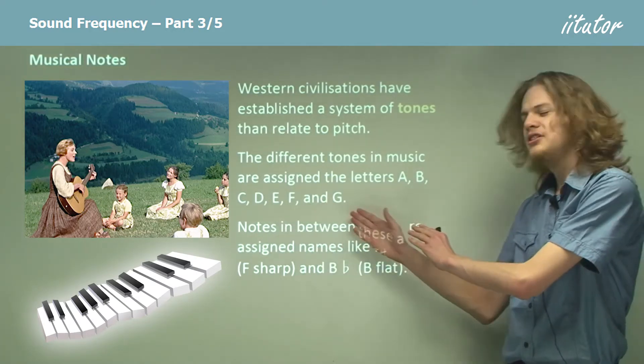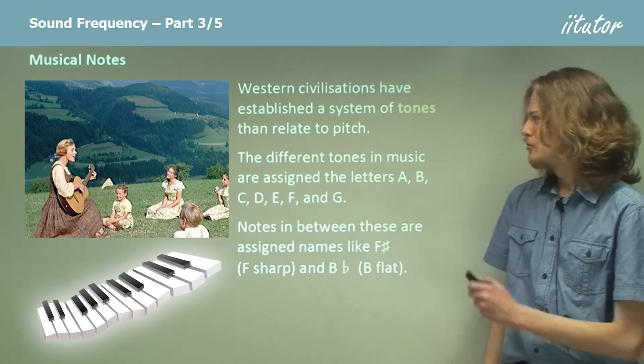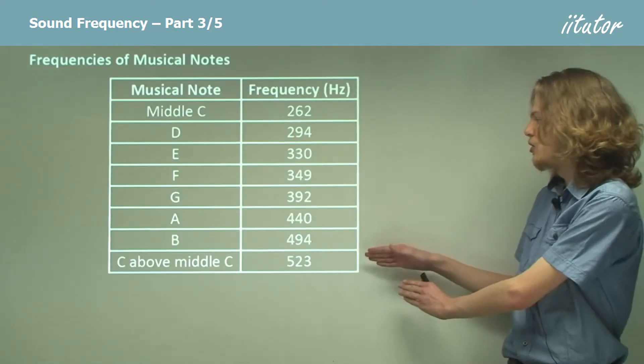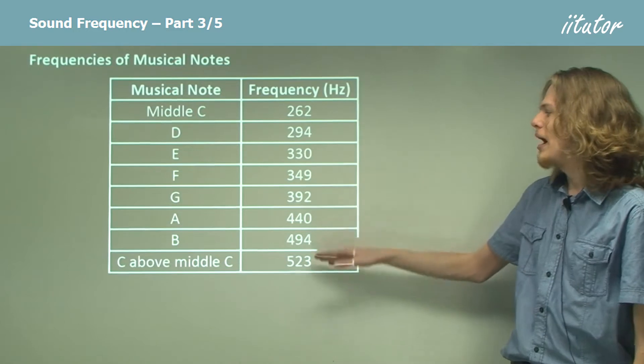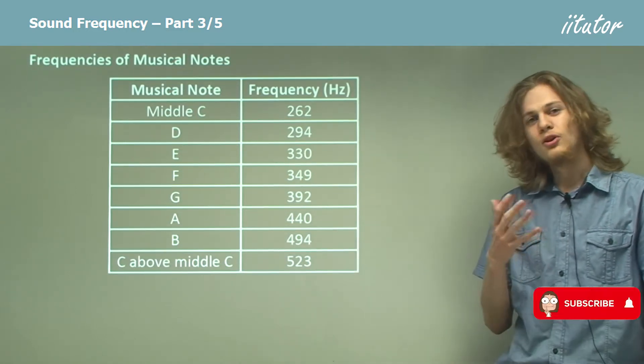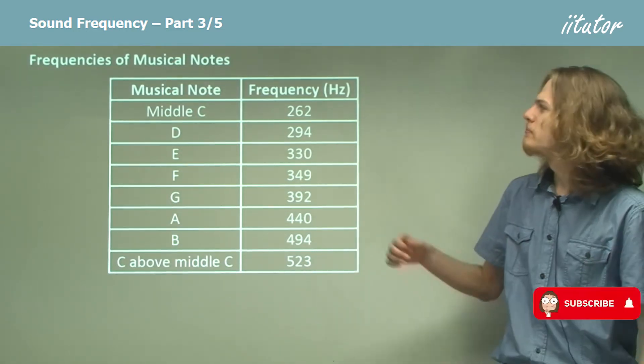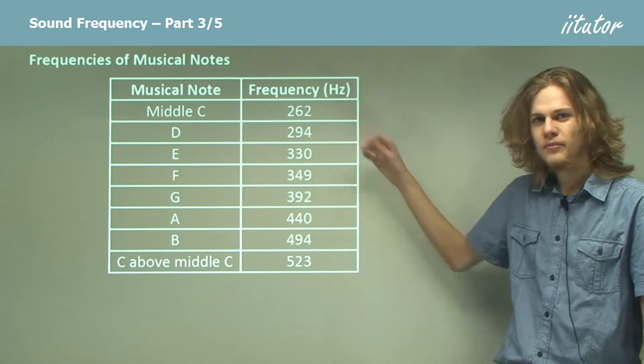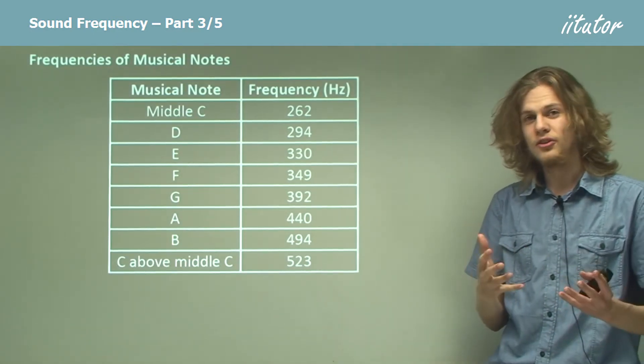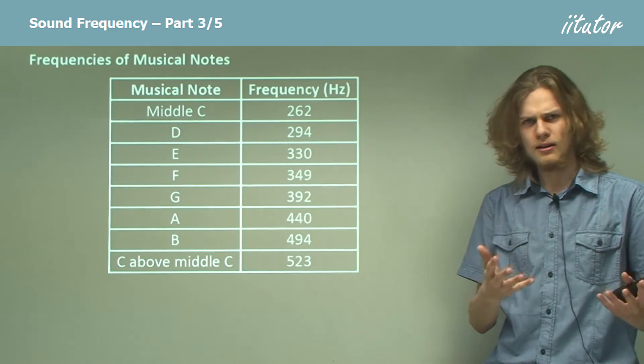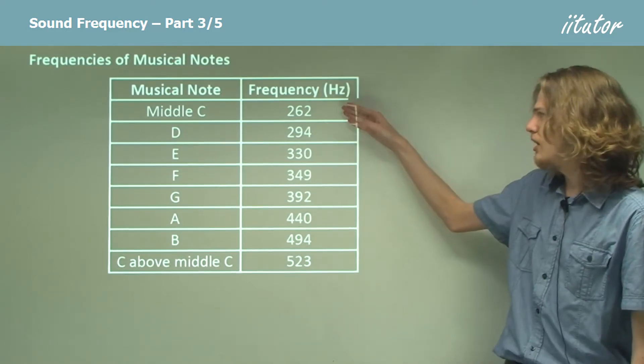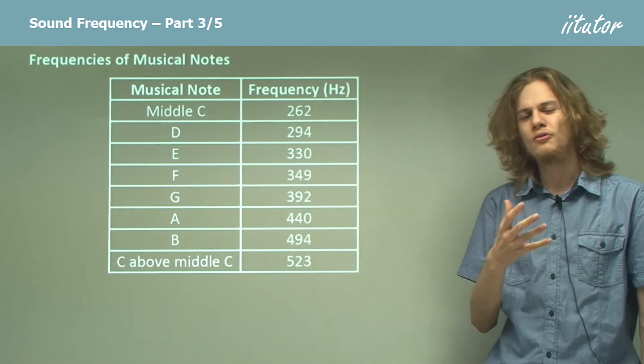So what happens when we get past G? Well, we can see over here that we'll go back to the same note. So because all the different notes have different frequencies, we can write them down. If we have a starting note, say middle C, and that will have a frequency of around 262 Hertz.